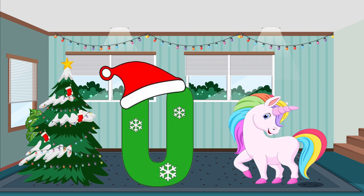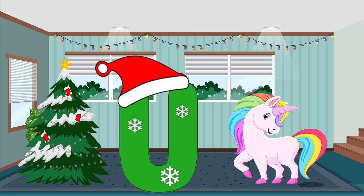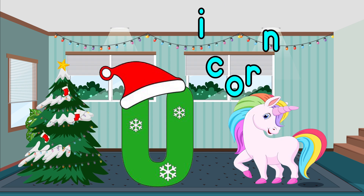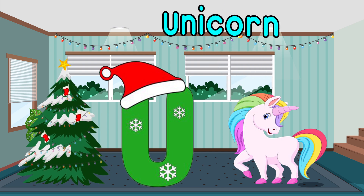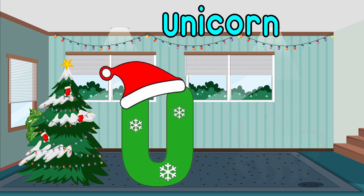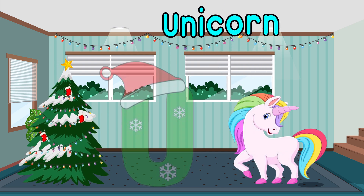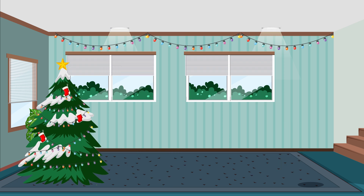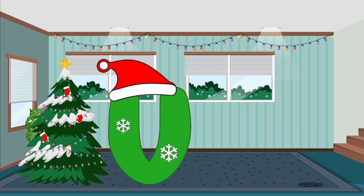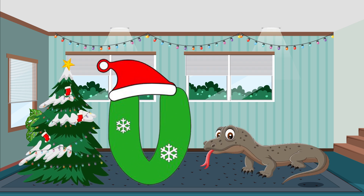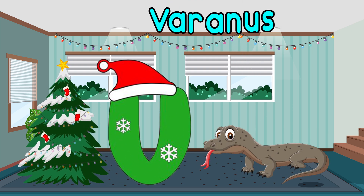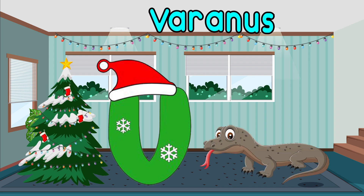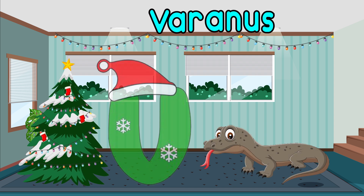U is for unicorn. U, U, unicorn. U, U, unicorn. U, unicorn. V is for vereness. V, V, vereness. V, V, vereness. V, vereness.